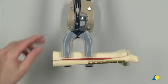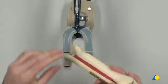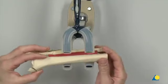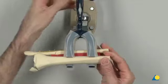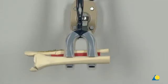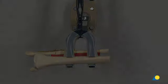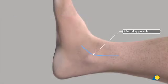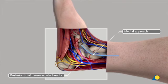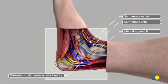To facilitate access to the medial maleolus, the bone model is rotated 180 degrees. The next step is the reduction and fixation of the medial maleolus. On the medial side, a medial approach is made through an anteriorly curved medial incision on the medial maleolus. The posterior tibial neurovascular bundle must be respected. The surgeon should be aware that the great saphenous vein and the saphenous nerve lie anterior to the incision.